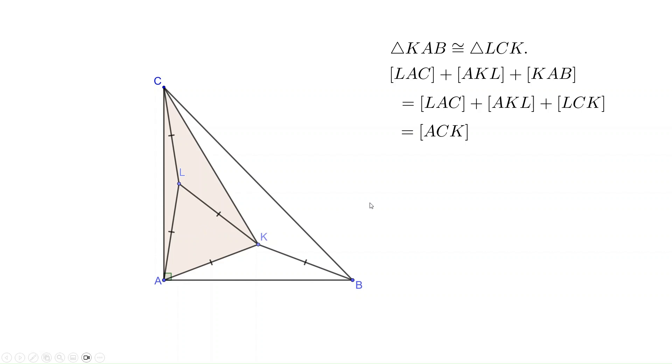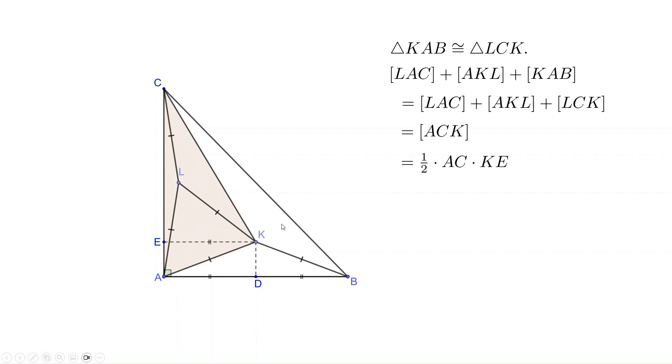How do we calculate the area of this triangle? Well, it equals the base AC times the altitude KE divided by 2. Now, look at the altitude KE. It is one side of the rectangle ADKE, so it is equal to AD. But AD is just one half of AB. So it is equal to 1/4 times AC times AB.